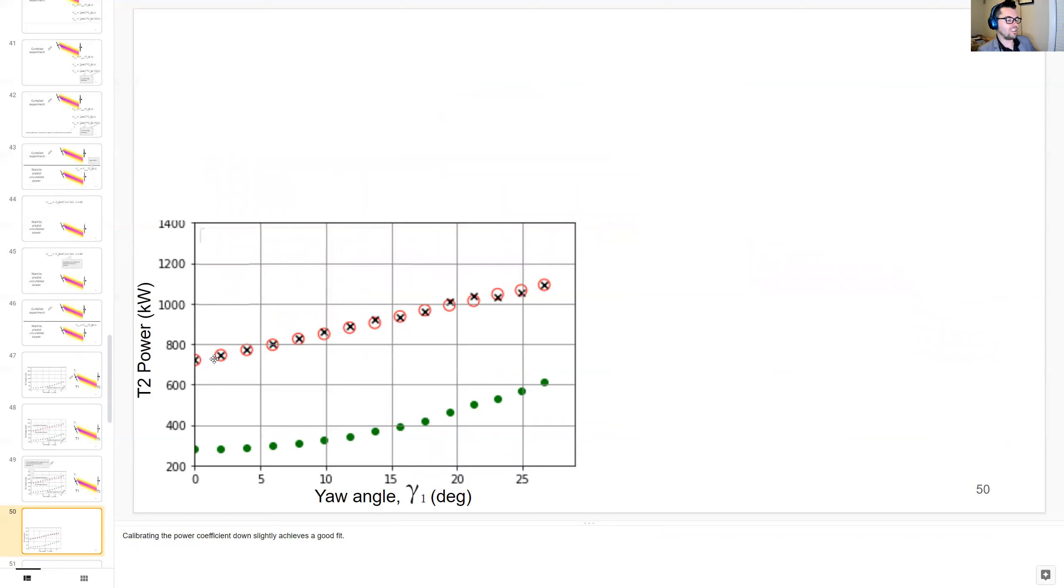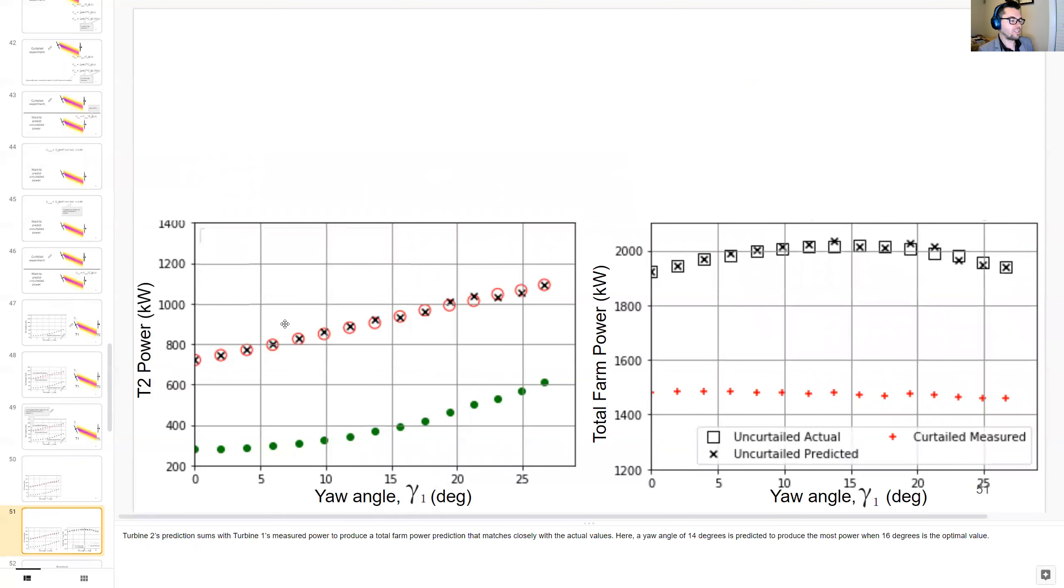Now turbine 2's predictions sum with turbine 1's measured power to produce a total farm power prediction that matches closely with the actual values. Here a yaw angle of 14 degrees is predicted to produce the most power when 16 degrees is the actual optimal value.